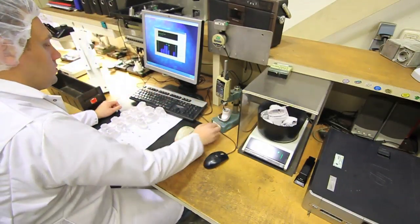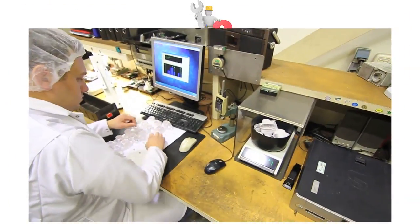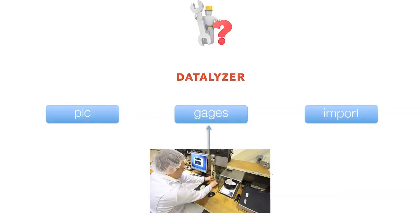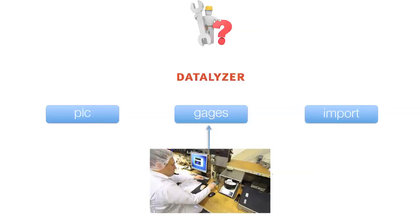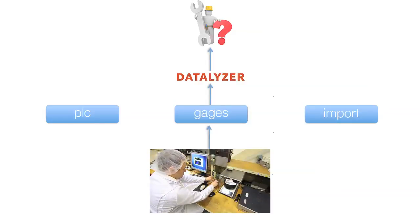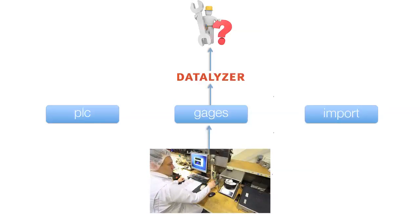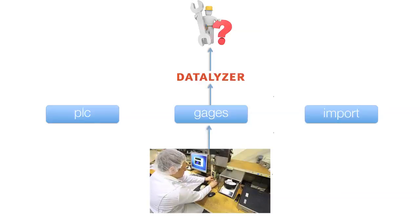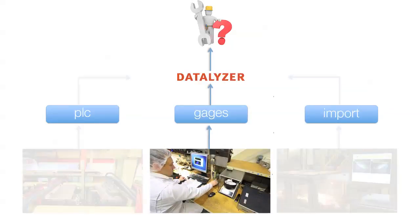Some critical characteristics are not measured automatically. In that case, the operator takes a subgroup from the process and the products are measured at a measurement stand. The measurements are entered manually or sent automatically from gauges to Datalyzer. The results are clearly visualised for the operator, so the operator can quickly see if the process is in control and take appropriate action if the process is out of control.